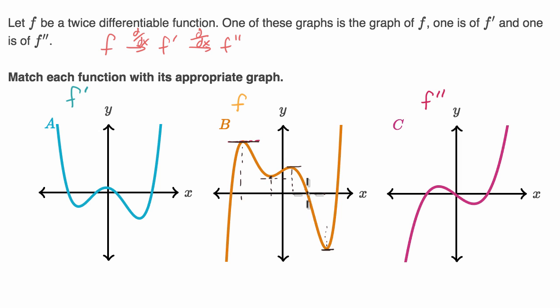So let's see, if this is the derivative, then this function should be equal to zero at this x value, this x value, this x value, and this x value, because the slope of the tangent line at those x values looks like zero. So this function is equal to zero here, here, here, and here.